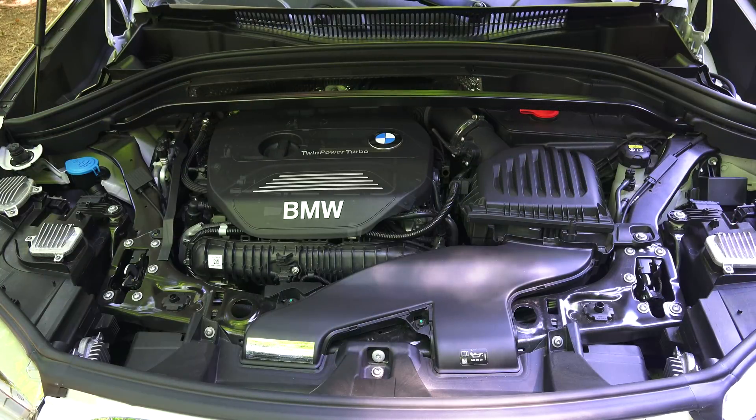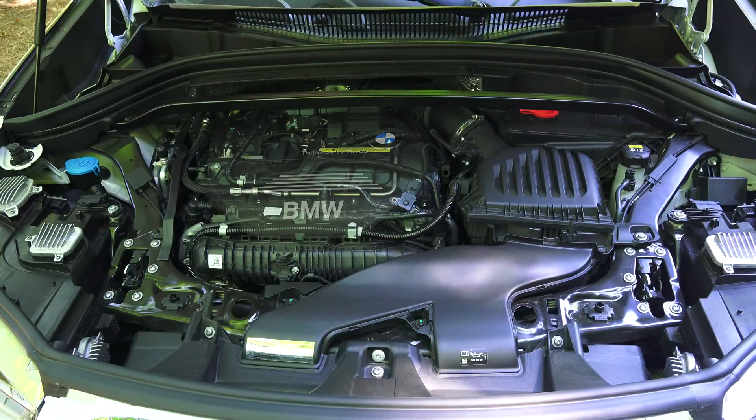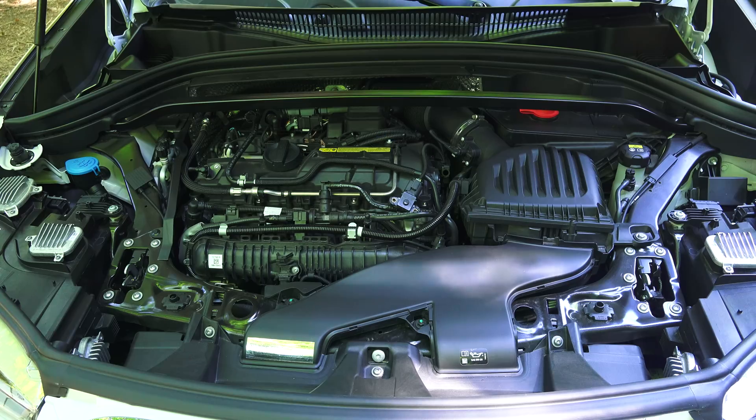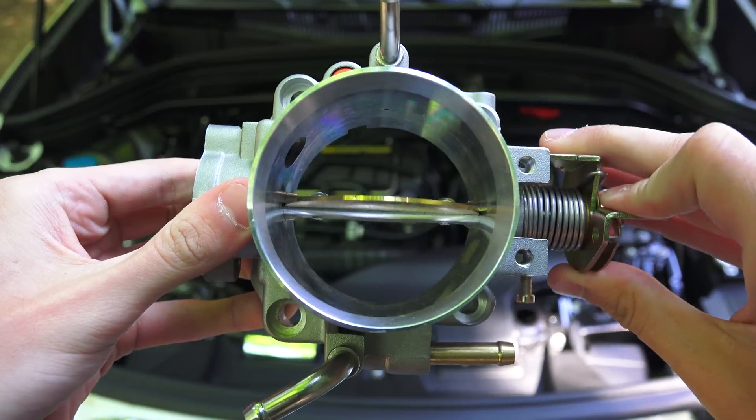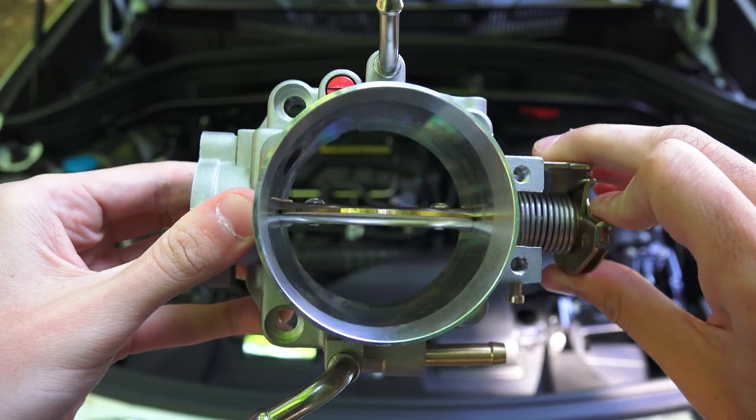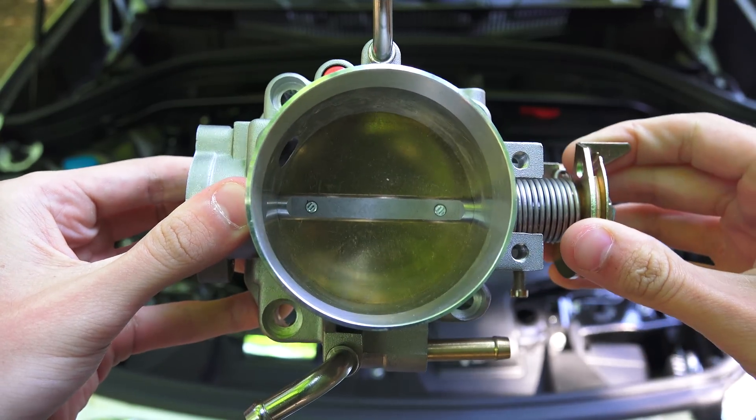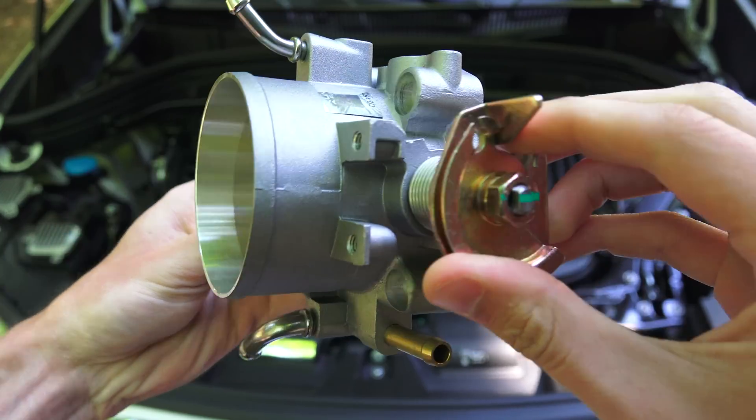BMW engines like this 2-liter turbocharged engine in the X1 operate differently than traditional gasoline engines. In most gasoline cars, when you press the gas pedal, you're changing how much the throttle valve opens - a butterfly valve regulating the amount of air that enters the engine.